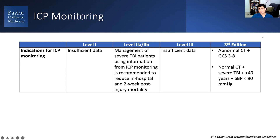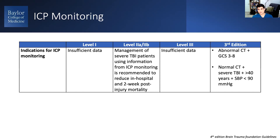Previously there were more specific recommendations for placing an ICP monitor, including an abnormal CT with a low GCS, or a normal CT with a very low GCS and hypotension. At our institution, we basically follow this abnormal CT and low GCS requirement. The reason is we're looking for a diffuse brain injury or signs of diffuse brain injury that might evolve over time, which you can really only assess by examining the patient and monitoring their ICP.